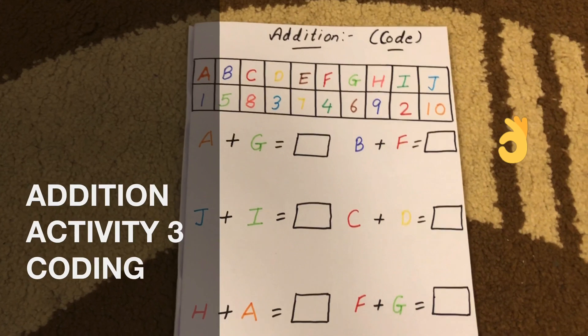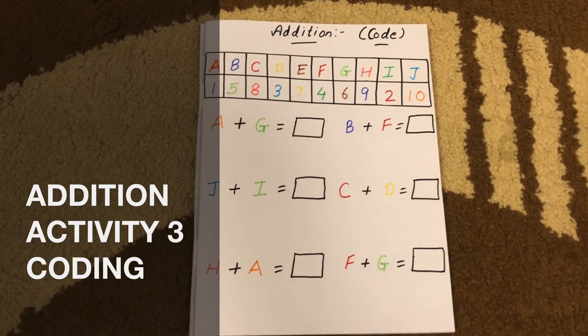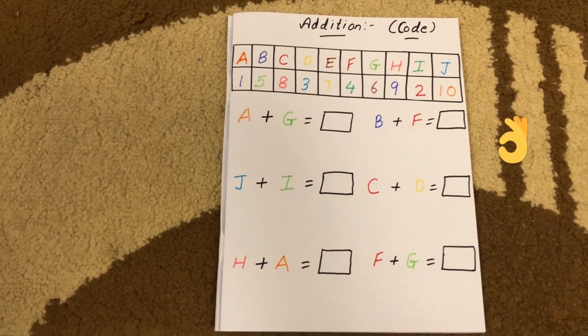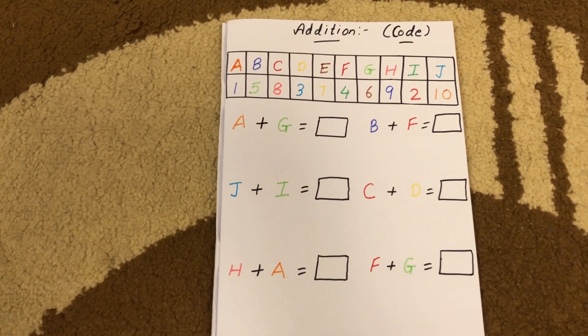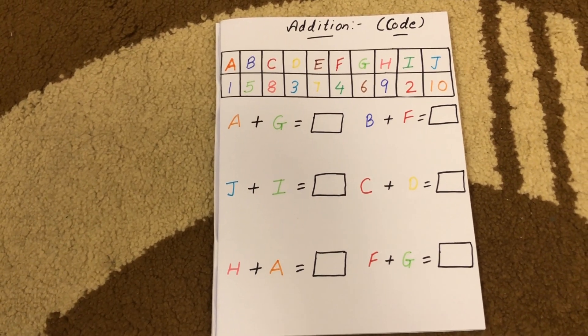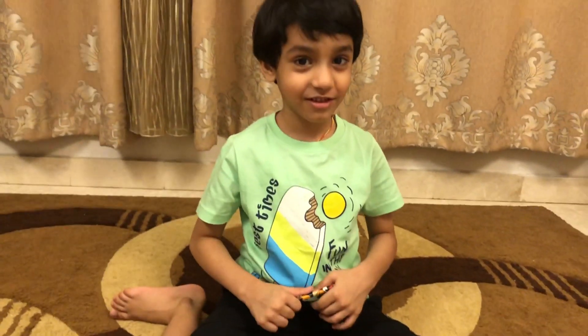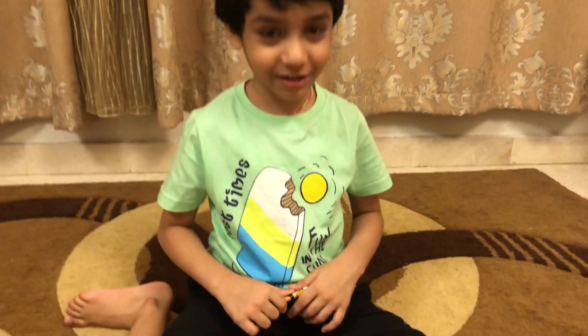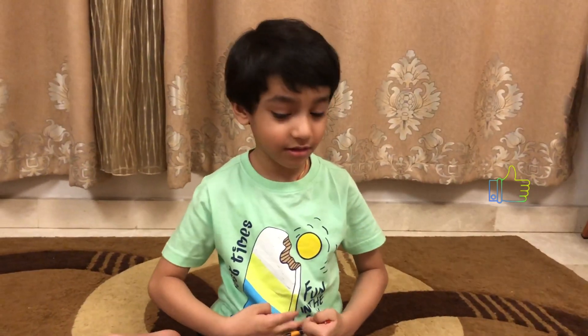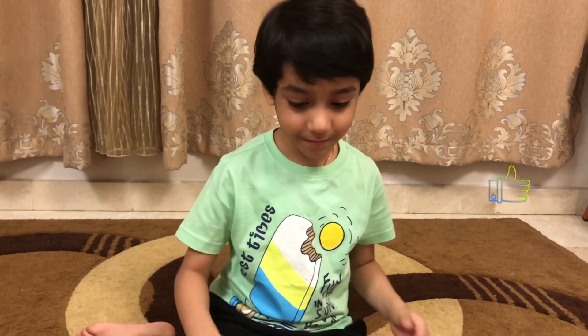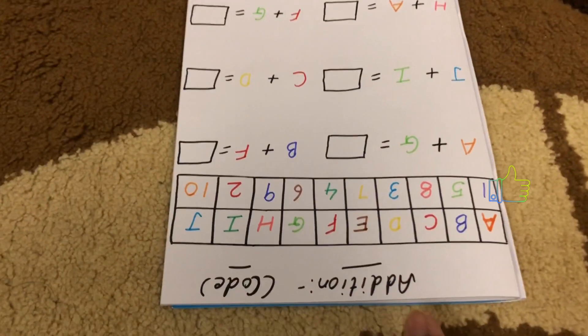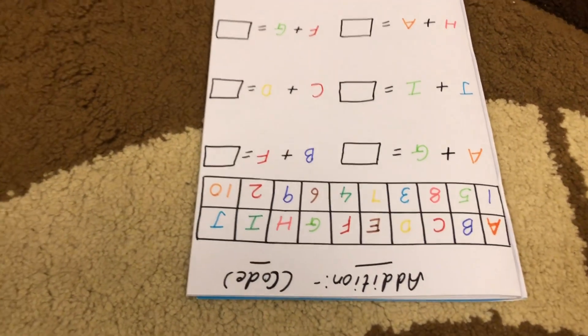So the next one is the same one I did but with alphabets this time. Are you ready, Abeer? I am really confused now. Why? Because I never did this. Yes, this is the first time I'm introducing it to you. It's okay, let's try. It is the same way you did it with the shapes just now, but this time I put alphabets.